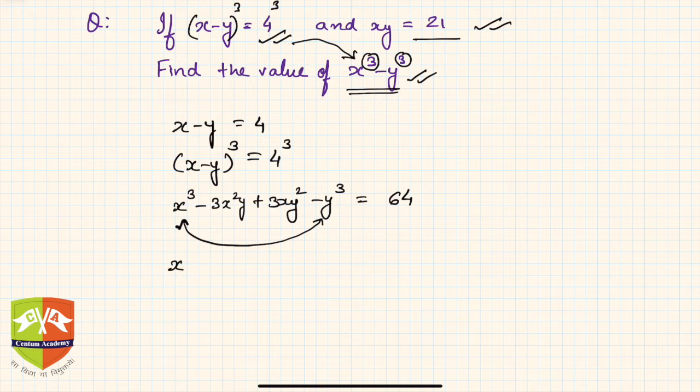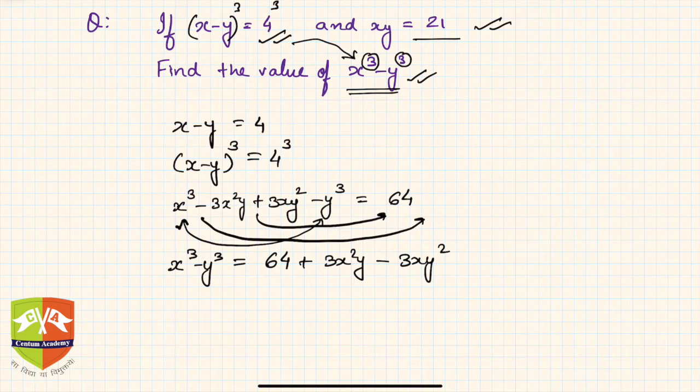x cube minus y cube is what we expect and the rest everything should be transferred on the other side. So it will be 3x squared y minus 3xy squared. This goes on the other side becomes negative, this goes on the other side becomes positive.